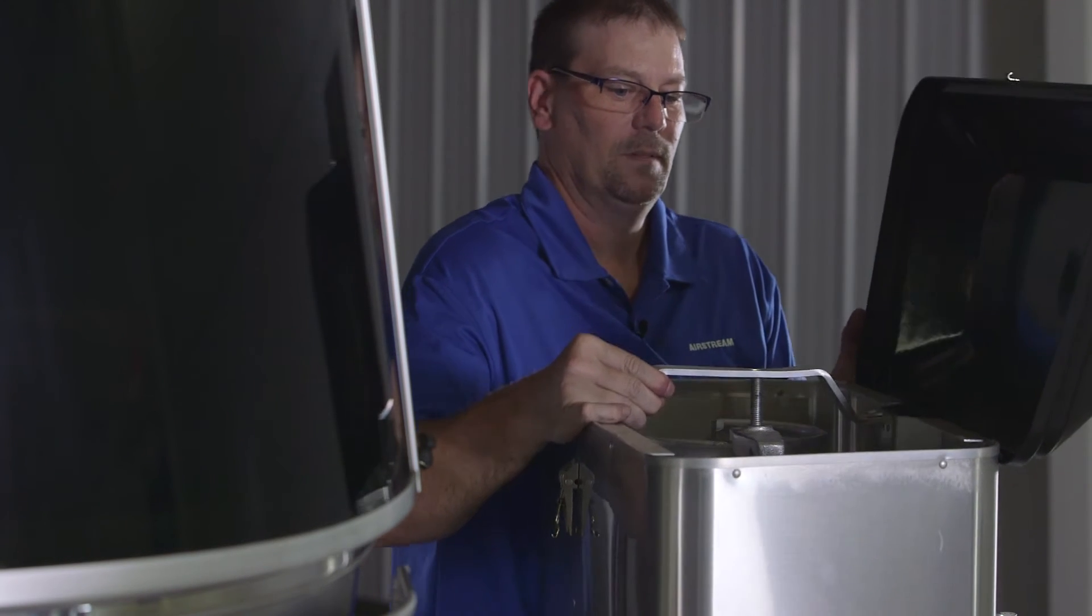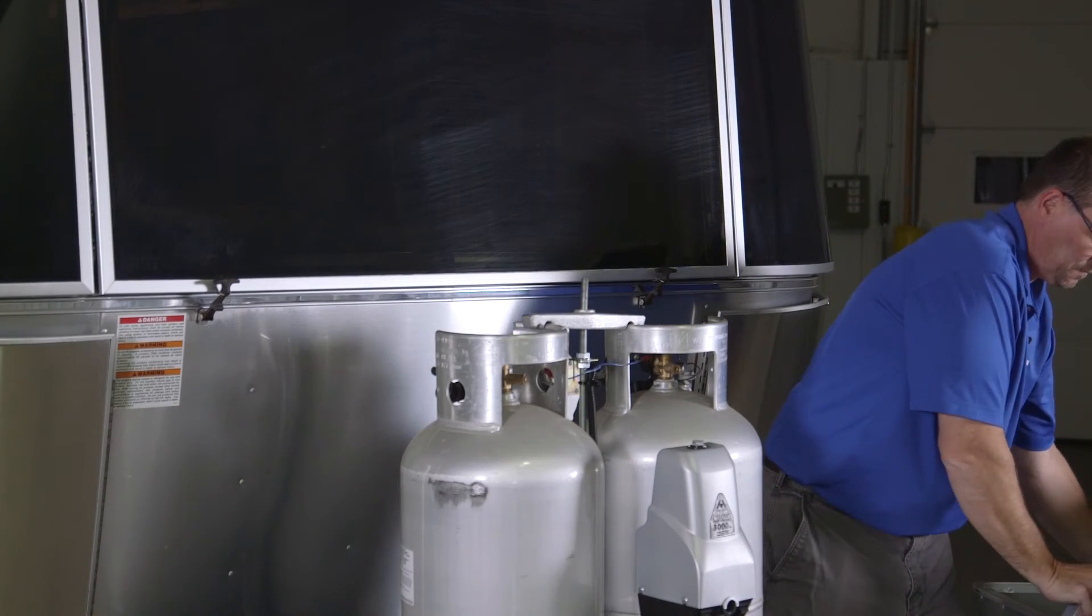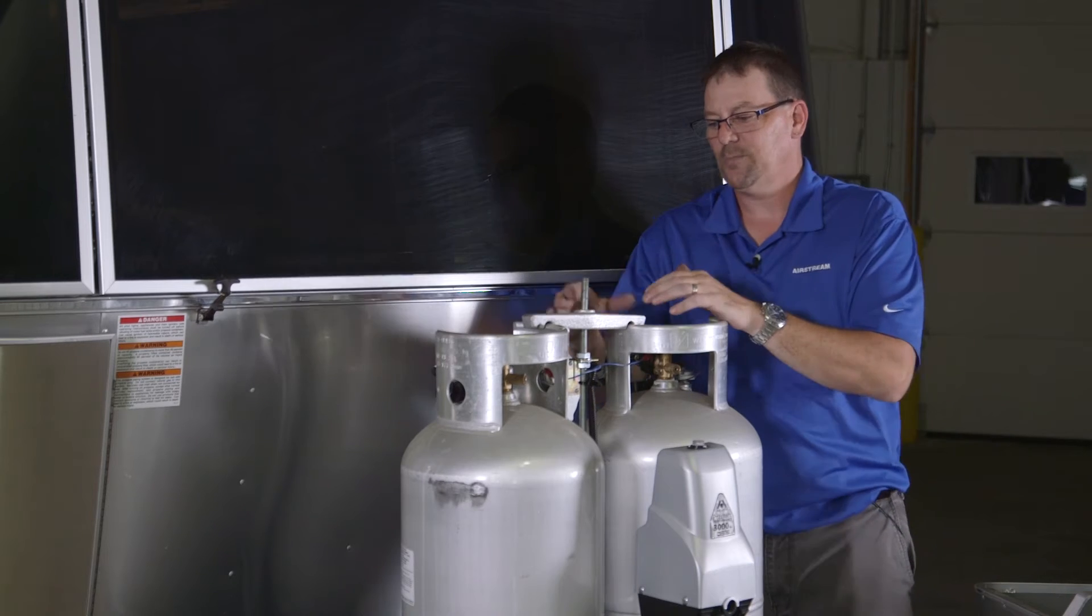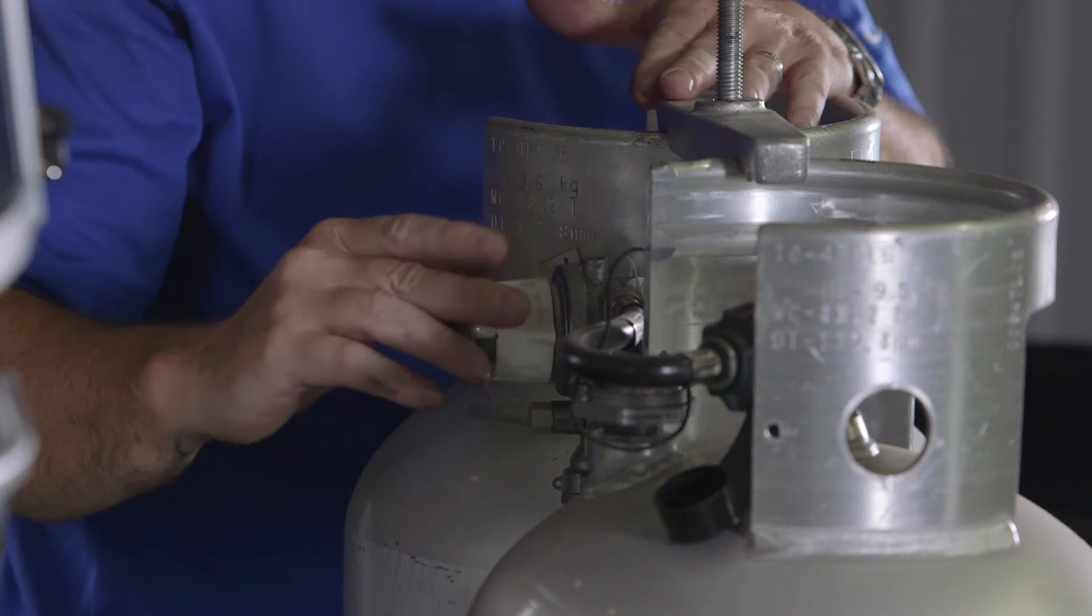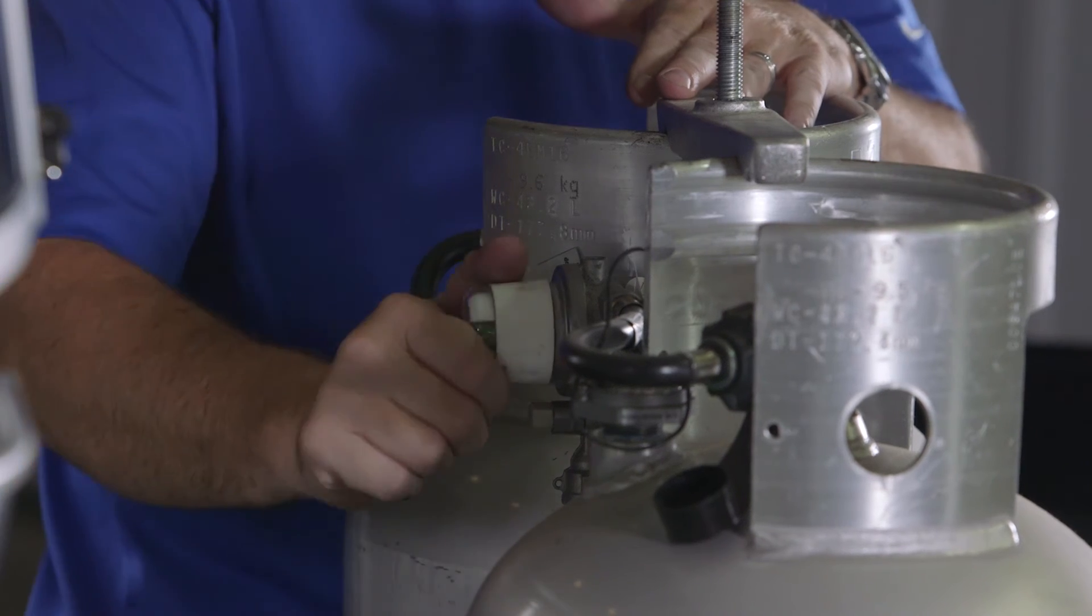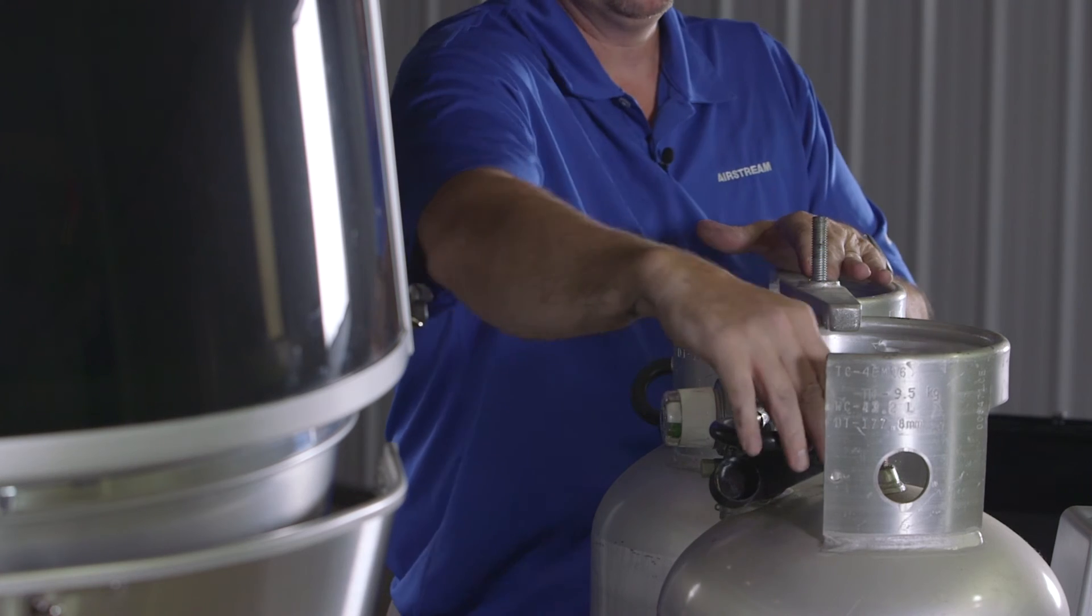At this point, we want to take the regulator that's pointing towards the empty tank and rotate that to the full tank. Once we have that done, we can shut the bottle off and disconnect the hose.